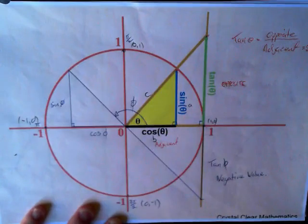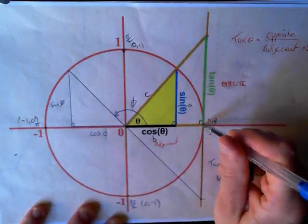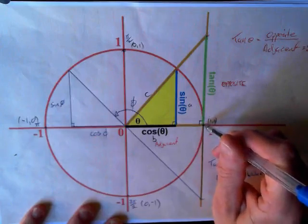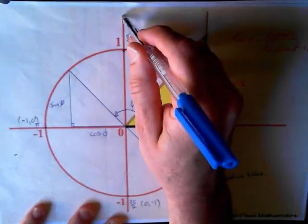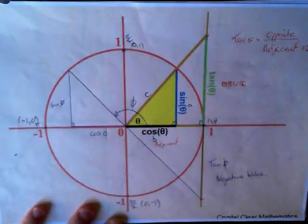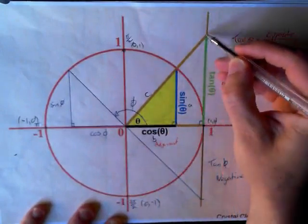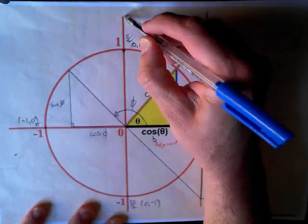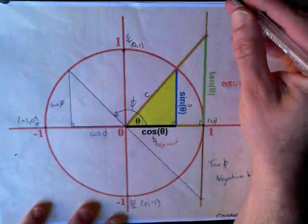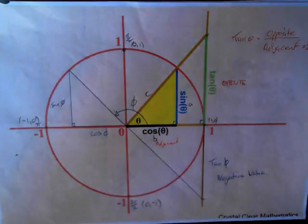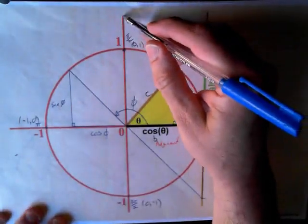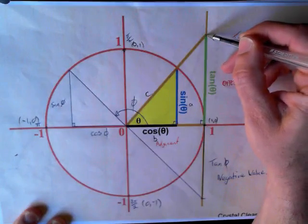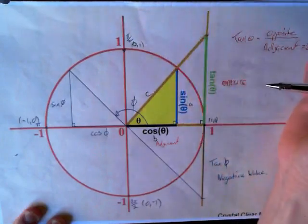Looking at the tangent function: when the angle equals 0, tangent equals 0. As the angle increases from 0 to 90, just before you get to 90, you've got a very, very big value for tangent. As this angle increases, this length gets longer. When the angle is like 89.9 degrees, the value for tangent is very, very big, because it takes a long time for those two lines to converge. When the angle becomes 90 degrees, the tangent becomes undefined — because the two lines are parallel, so they don't intersect.